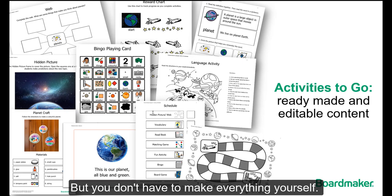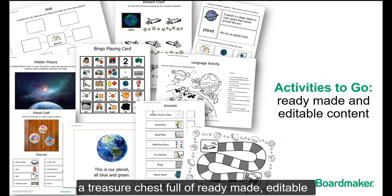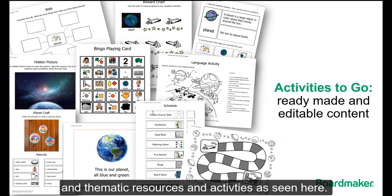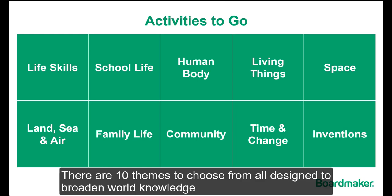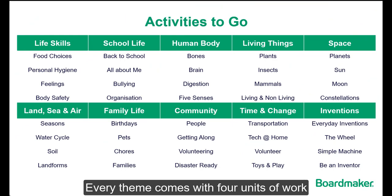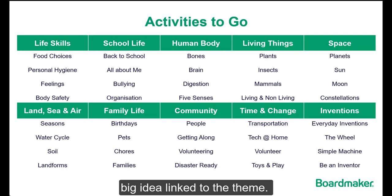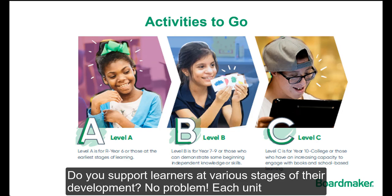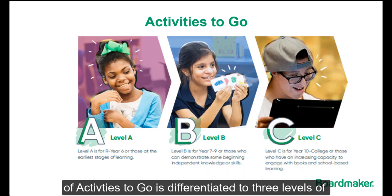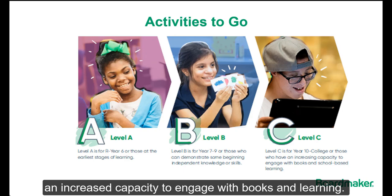But you don't have to make everything yourself. BoardMaker 7 also comes with pre-made curriculum called Activities to Go — a treasure chest full of ready-made, editable, and thematic resources and activities. There are ten themes to choose from, all designed to broaden world knowledge and support the understanding and use of high-utility vocabulary. Every theme comes with four units of work, each designed to be a week of teaching and to dive into a big idea linked to the theme. Each unit of Activities to Go is differentiated to three levels of learning, from those at the earliest stages to those with an increased capacity to engage with books and learning.